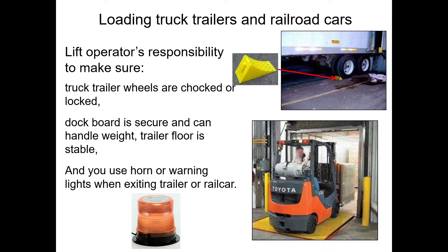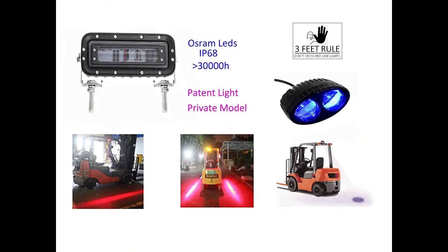When loading truck trailers and railroad cars, the lift operator is responsible for ensuring trailer wheels are chocked or locked, the dock board is secure, the trailer floor is stable, and the horn or warning lights are used when exiting. Some facilities use blue lights pointing forward or backward based on gear direction, and red line lights to communicate a three-foot rule — pedestrians should not cross the red line, and should only approach when the operator shuts off the lift.